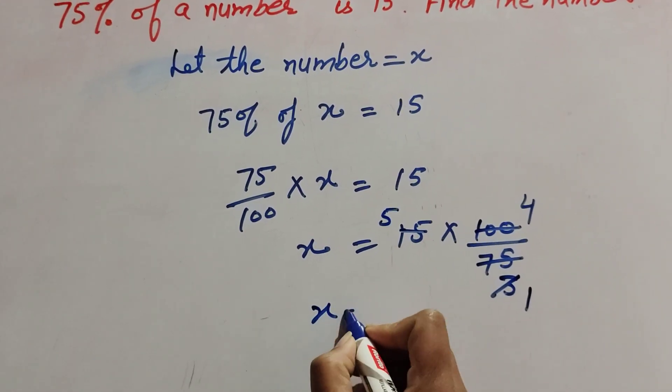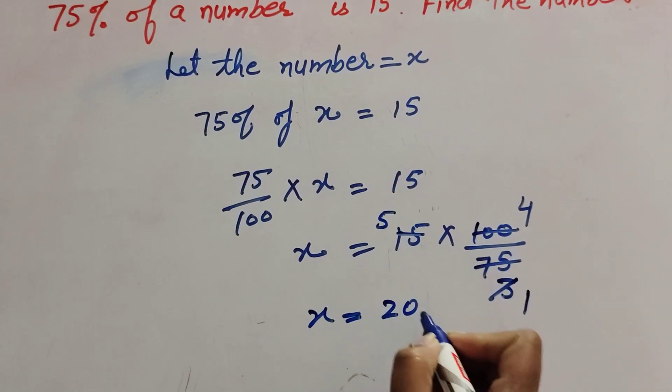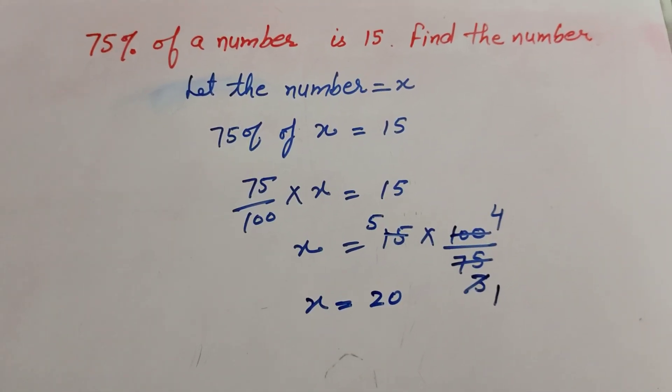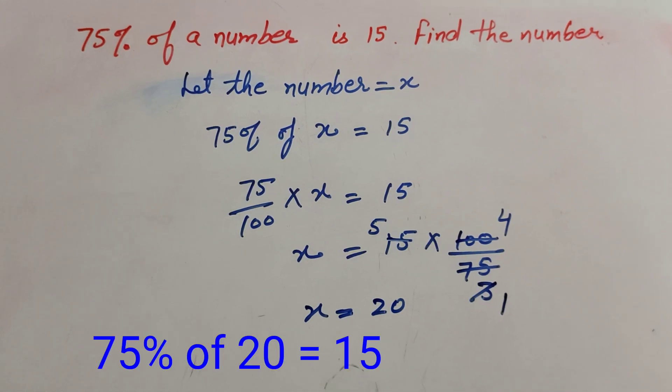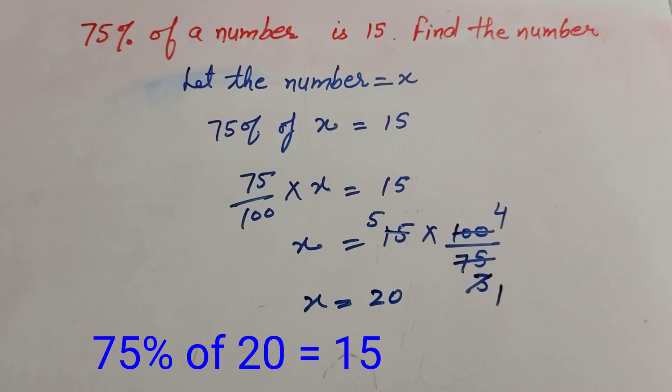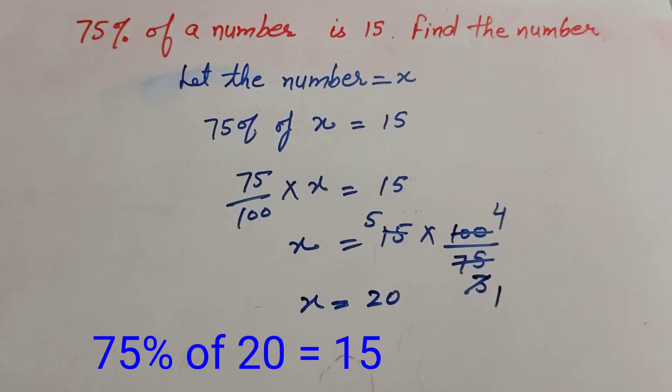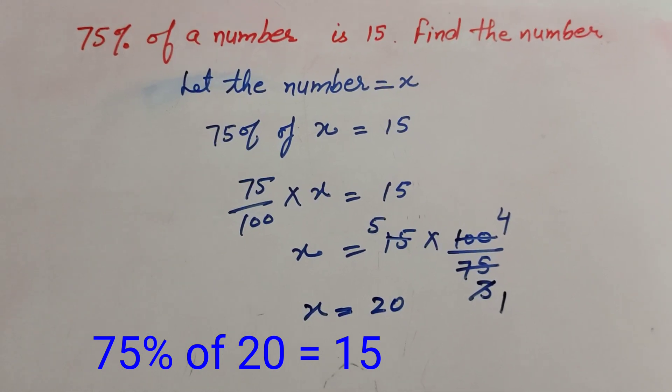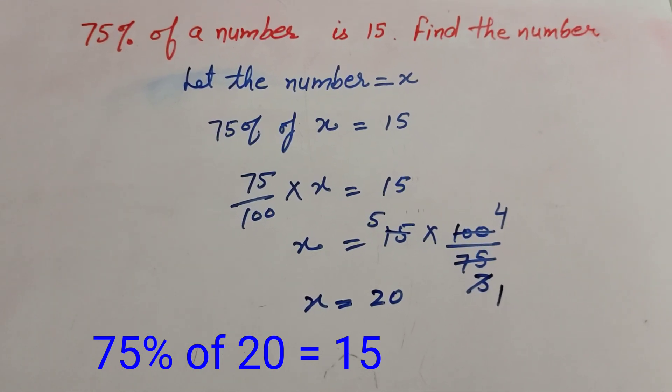So x is equal to 5 multiplied by 4, which equals 20. Therefore, x equals 20. So 75 percent of 20 is equal to 15. Thanks for watching, like, comment and share my video, subscribe my YouTube channel.